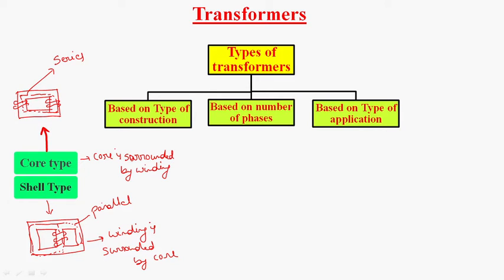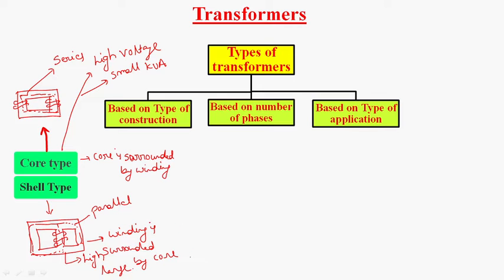In general, core type transformers are most economical for high voltage applications and are mostly used for small KVA rating. Whereas shell type transformers are economical for high current and large KVA rating.